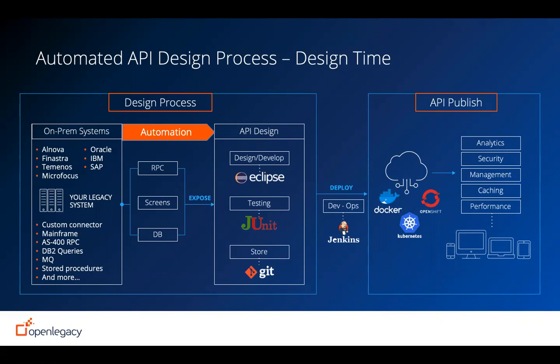Deployment can be done anywhere — on-prem, on the cloud, any cloud, OpenShift, Docker, Kubernetes, whatever cloud environment. This whole process can be highly automated and inserted into a new kind of DevOps pipeline. Every topic we talked about can be expanded and discussed much further. But I do see some questions accumulating, so I'll stop here and move it to Marty to take the questions.